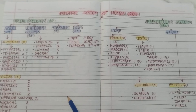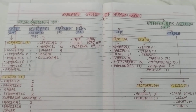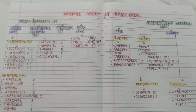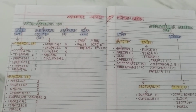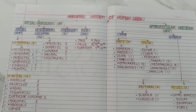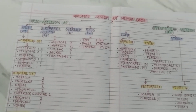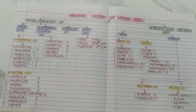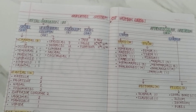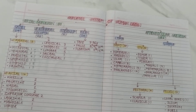This is the skeleton of the adult human body. If you like this video, please like and subscribe to my YouTube channel, and don't forget to hit the bell icon. Thanks for watching.